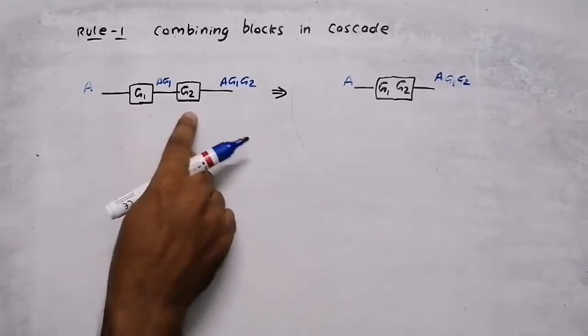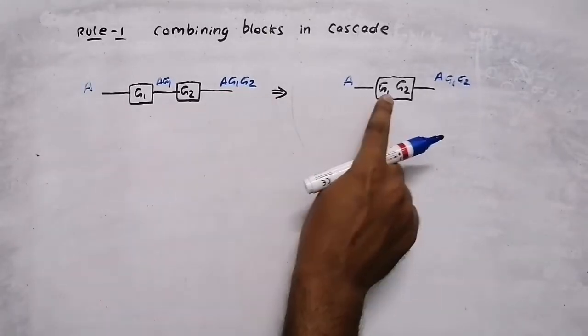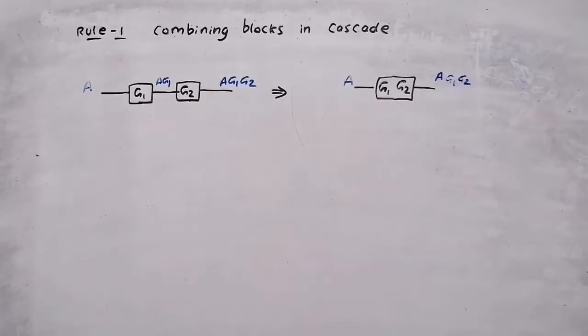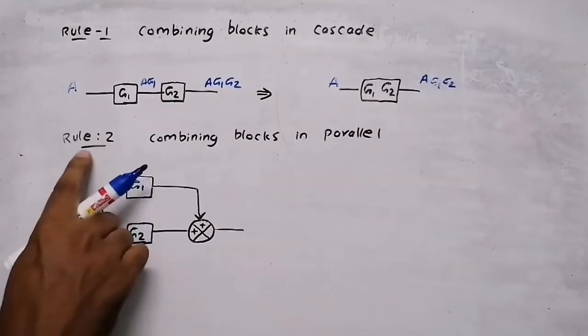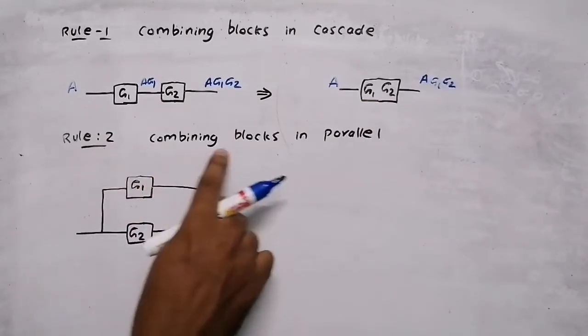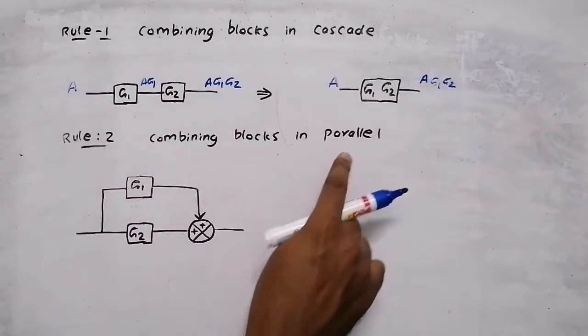If two blocks are in series, just multiply them. In rule number two: combining blocks in parallel.